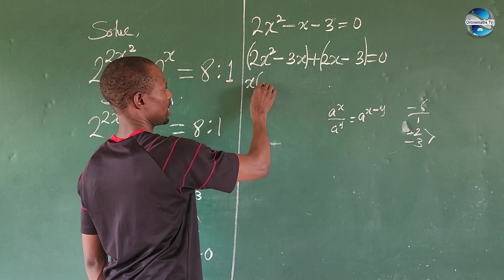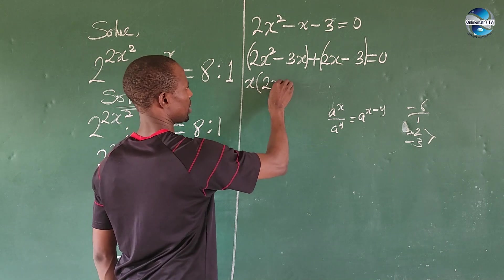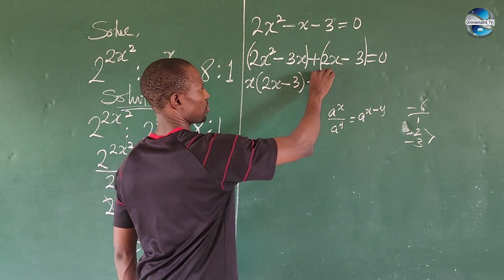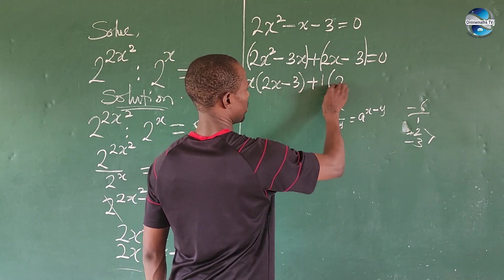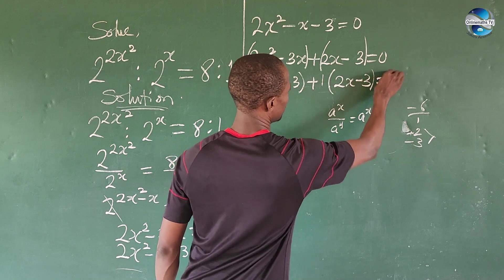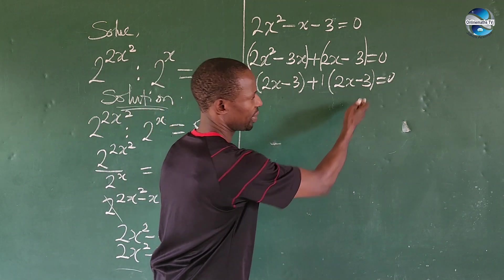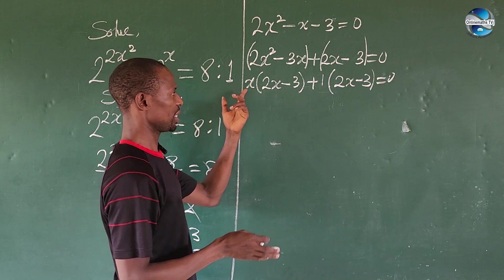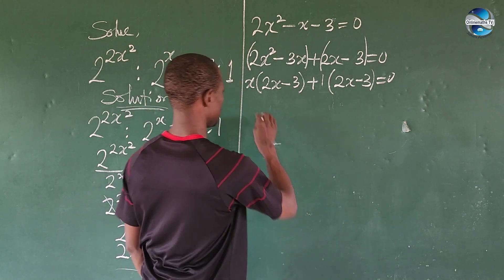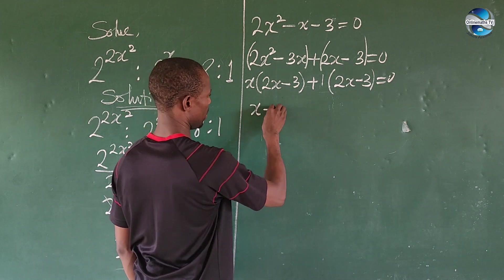What is common to the first two terms is x, so we have x(2x - 3). What is common to the last two is 1, so we have +1(2x - 3). Since 2x - 3 is common to both, we factor it out: (x + 1)(2x - 3) = 0.